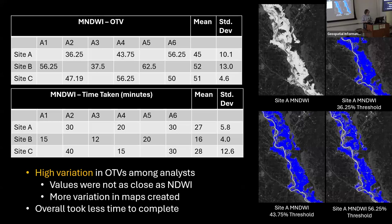Our MNDWI results are really interesting. We see almost the exact opposite: OTVs for this index are highly varied, with the exception of Site C being slightly closer together, still not within the ranges we see with NDWI. Looking at the maps, you can see more visual difference between them compared to NDWI maps. Interestingly, it also took less time to complete the MNDWI OTVs compared to NDWI, which will be interesting to look at in the future.